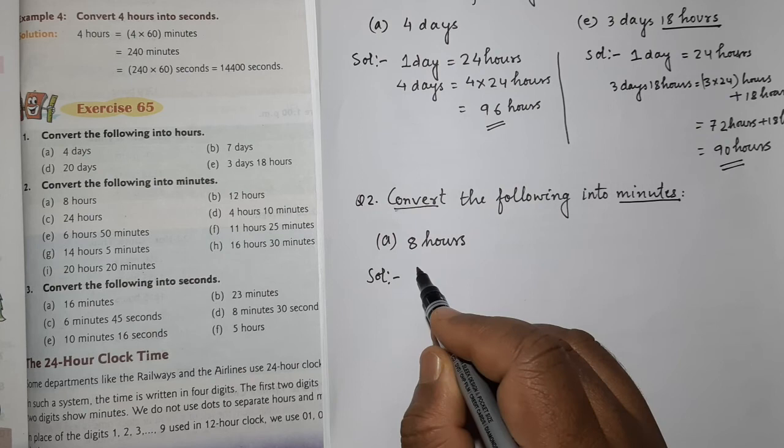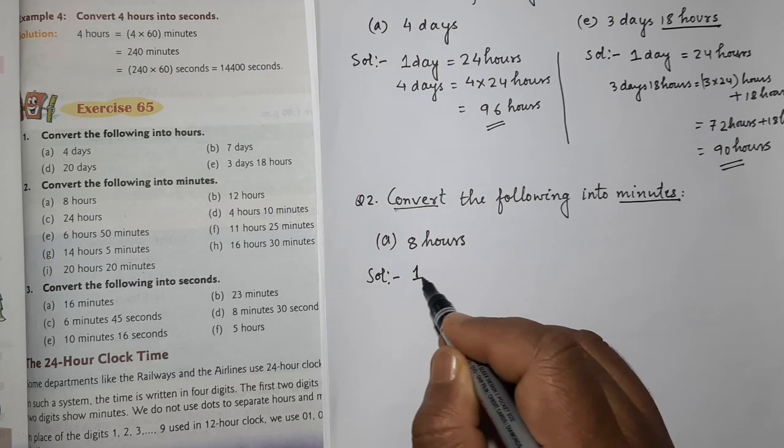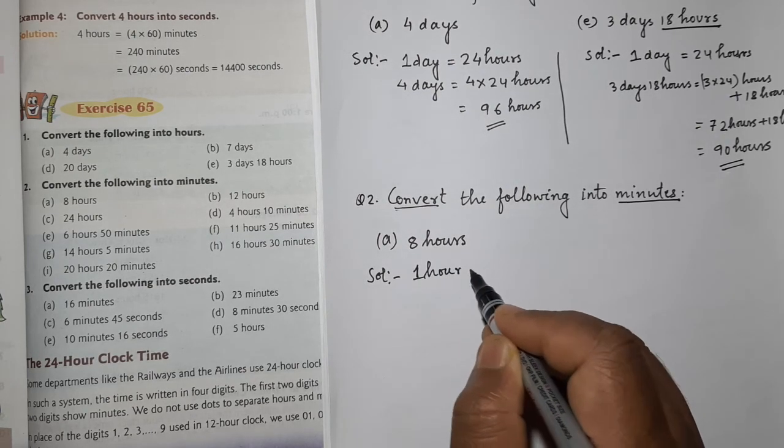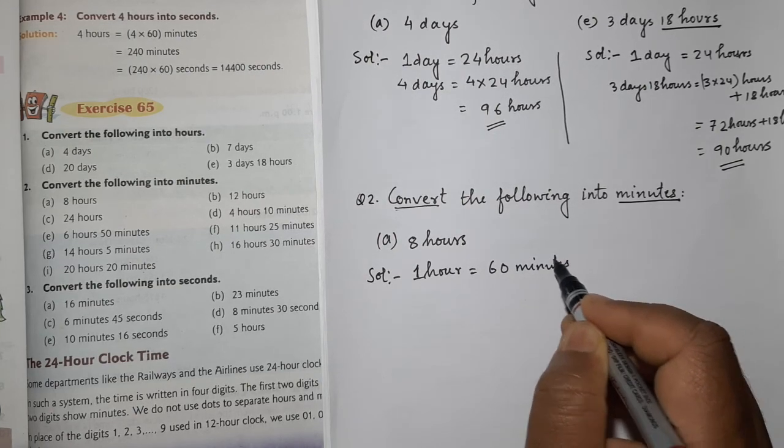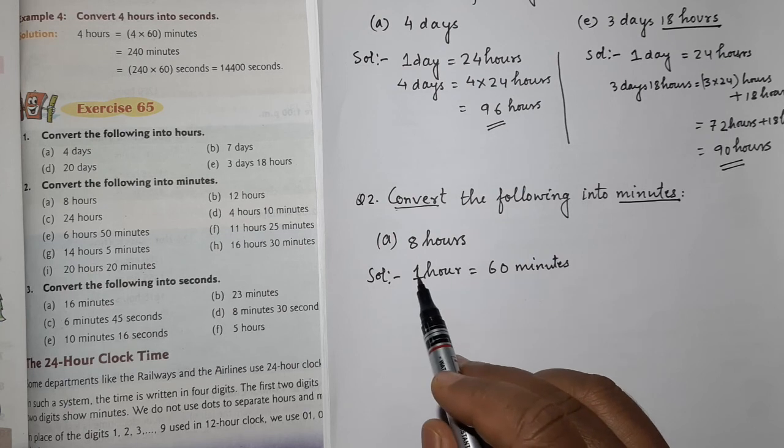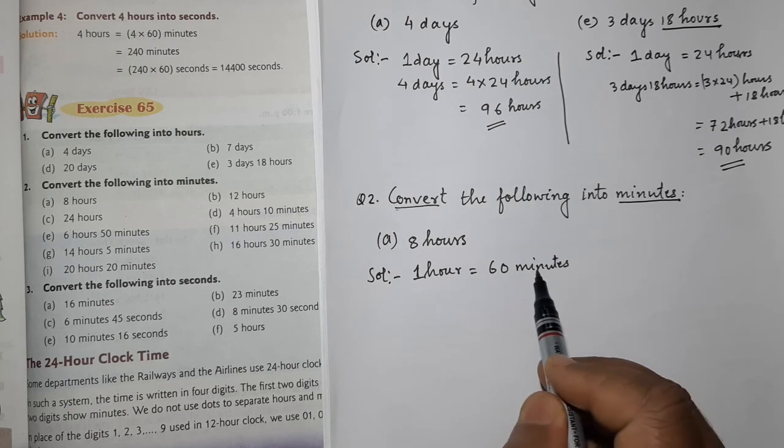So let us see. One hour. In one hour, there are 60 minutes. So you have to remember this children. In one hour, there are 60 minutes.